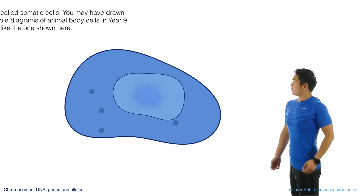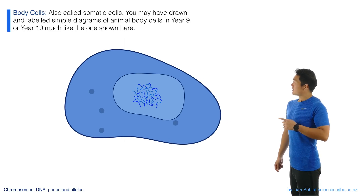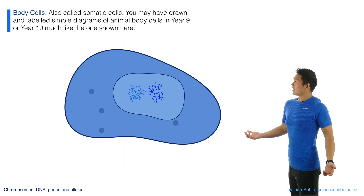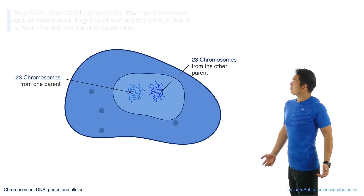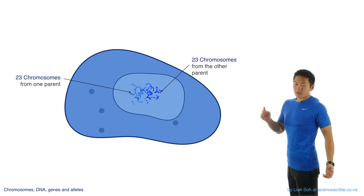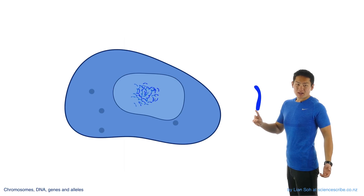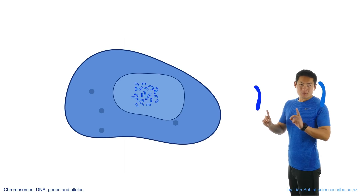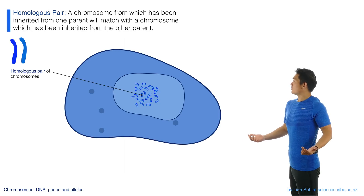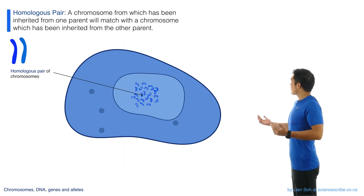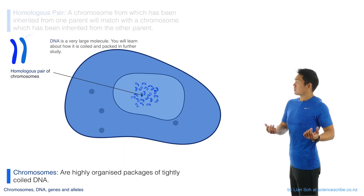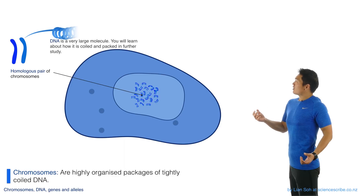Within the typical body cell of an organism is a set of chromosomes, and in humans there are 46 chromosomes. We get 23 from the mother and 23 from the father. For every single chromosome from the mother's side, it matches with one chromosome from the father's side — this gives you 23 homologous pairs of chromosomes. The chromosomes themselves are just highly organized structures.